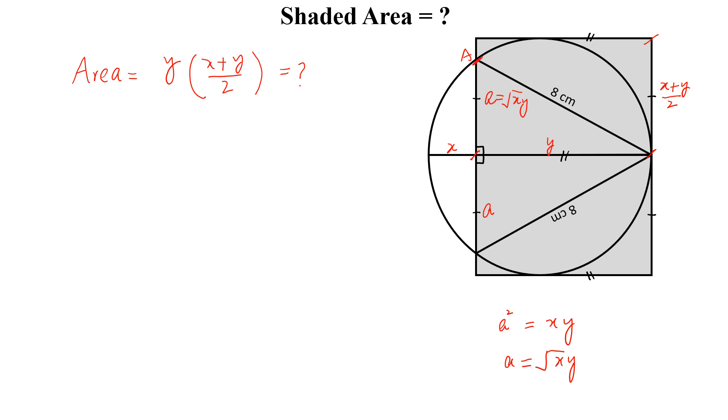Now if this is a, this is b and this is c, from this right angle triangle EBC, we can write xy whole square plus y square equal to 8 square by Pythagoras theorem.